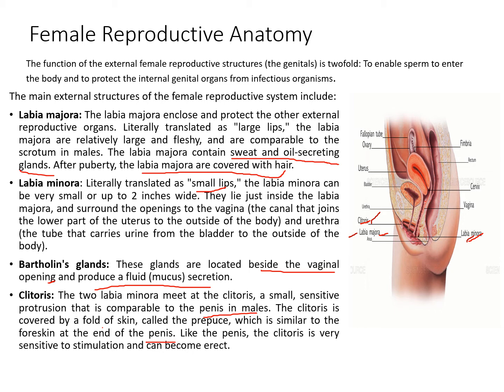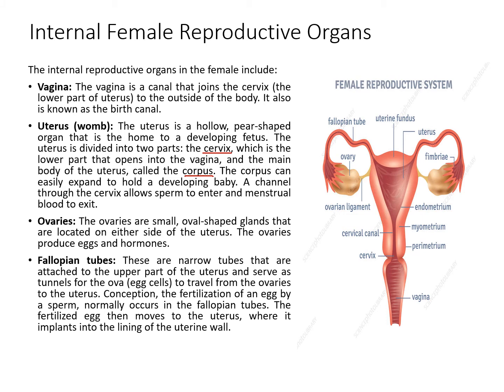The internal female reproductive organs are the vagina, uterus, ovaries, and fallopian tubes. The vagina is a canal that joins the cervix — the lower part of the uterus — to the outside of the body. It is also known as the birth canal.